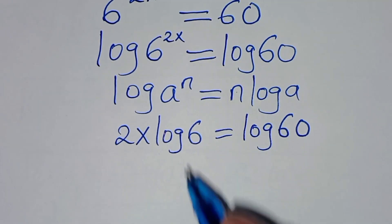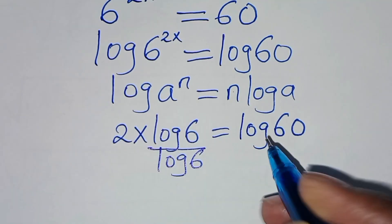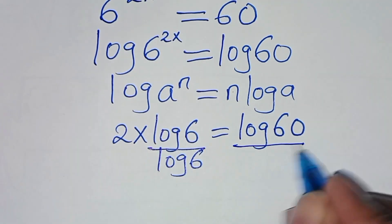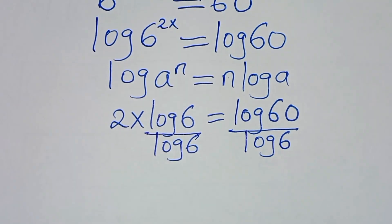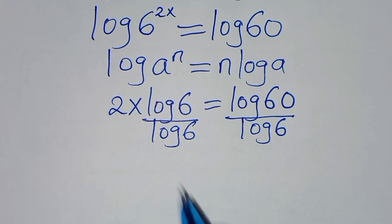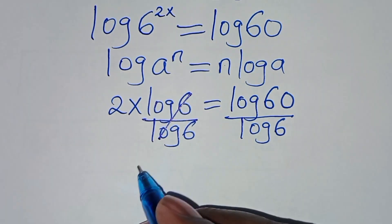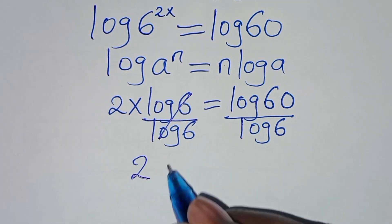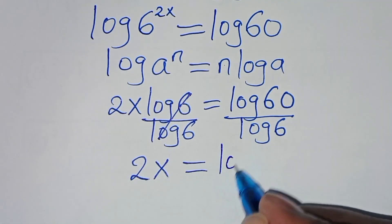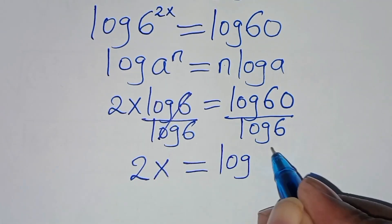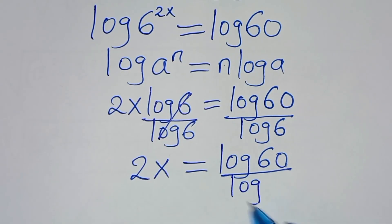Now the next step is to divide both sides by log 6. So log 6 and log 6 simplify, and we have 2x is equal to log 60 divided by log 6.